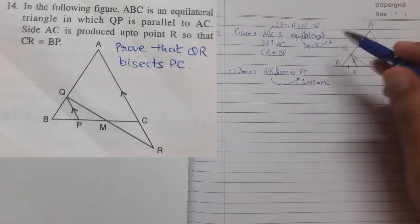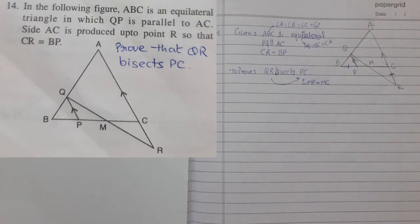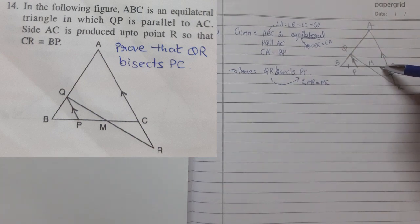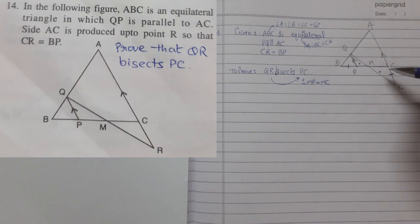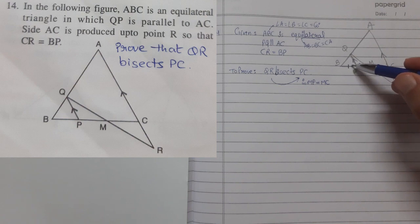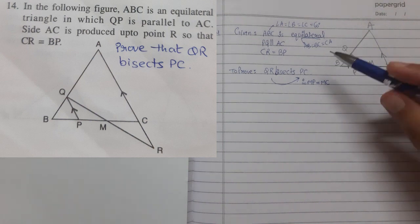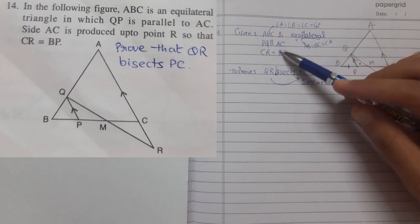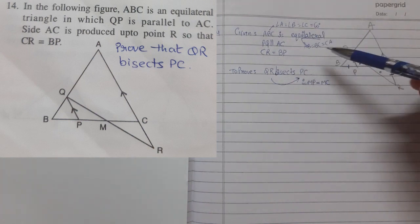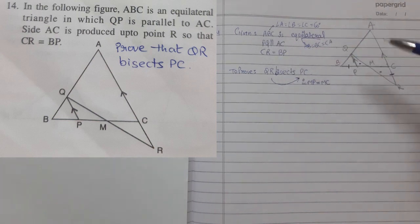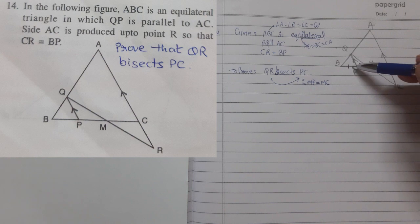We need to prove that these two segments are equal, and it's obvious that we need to prove two triangles are congruent. Since they are giving that this side equals this side, every piece of information given by the examiner is meaningful — they do not give unnecessary information at school level. Since CR equals BP, there must be some meaning, as this information will lead us to the triangles.